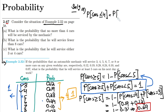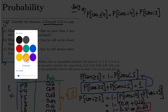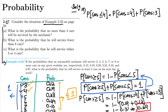We can write it as the probability of cars equal to 4 plus the probability of cars equal to 3, which are the two scenarios mentioned here for the number of cars less than or equal to 4 — that is 3 and 4. Putting in their values: the probability of cars equal to 4 is 0.19, and the probability of cars equal to 3 is 0.12. Adding them together gives 0.31.